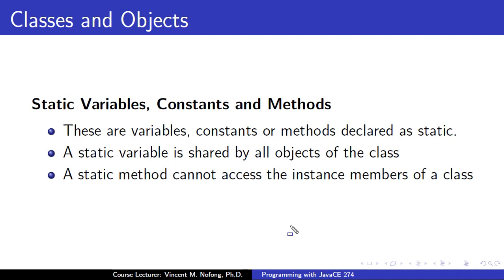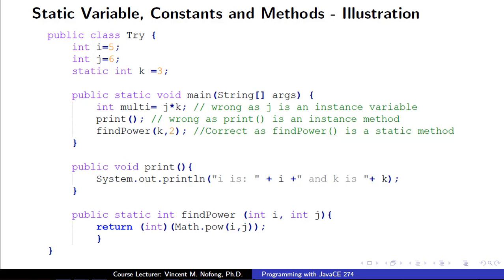When we were introduced to variables, we learned that variables could be local - declared inside a method and not static - or an instance variable - inside a class outside a method and not static - or a static variable. We need to understand what happens when we declare variables, constants, or methods as static and how we would access them. Static variables, constants, or methods are declared as static, and a static variable is shared by all objects in that class. However, a static method cannot access the instance members of the class.